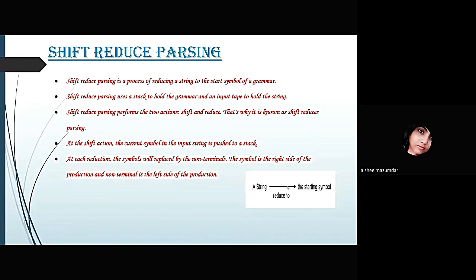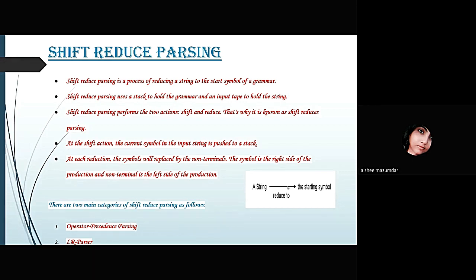There are two main categories of shift-reduce Parsing: operator precedence Parsing and LR Parsing. Operator precedence Parsing generates a parse tree for a given grammar and string, but the condition is that two consecutive non-terminals and epsilon never appear in the right-hand side of any production. Whereas in LR Parsing, it is the bottom-up parser which generates the parse tree for the given string by using unambiguous grammar, and it follows the reverse of rightmost derivation.